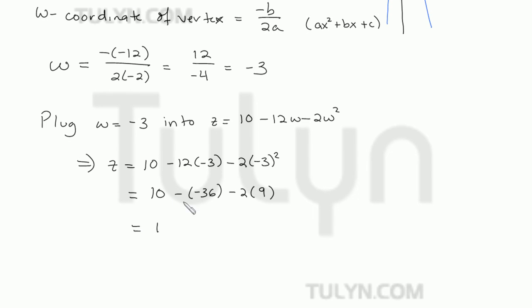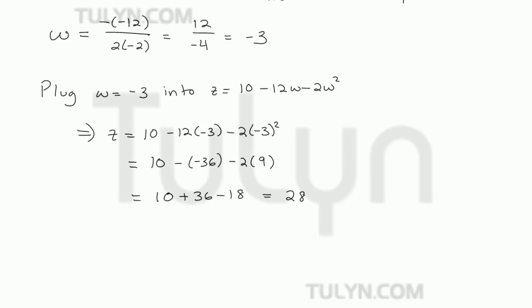So simplifying these signs here, 10 minus negative 36 is going to be 10 plus 36, and then minus 18. So we end up getting 28. And since that's the value we want to find, that's the maximum value of z. The max value of z is 28.